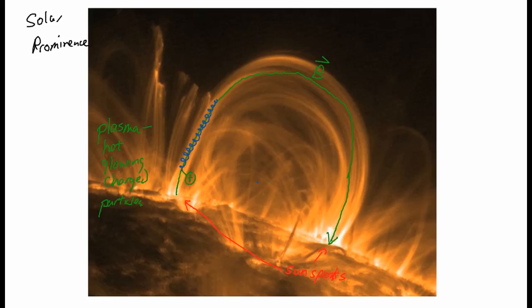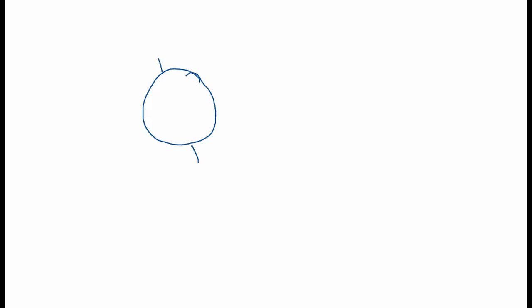Now that's a problem for us, because all those charged particles have a lot of energy. If the earth were unprotected, they would all come and run into us and cause great problems. Fortunately, the earth has a magnetic field as well — here is the earth's magnetic field.